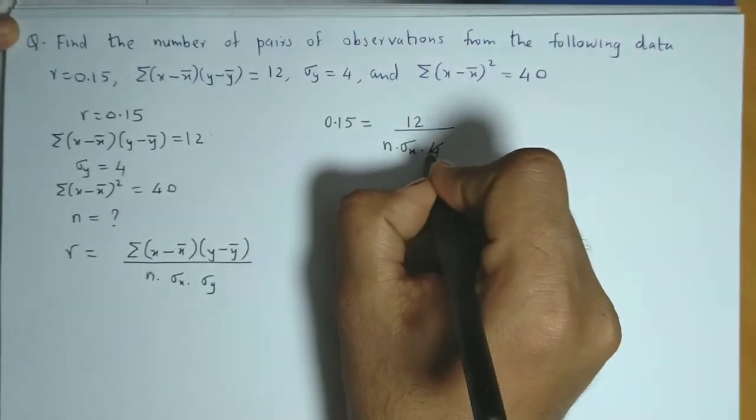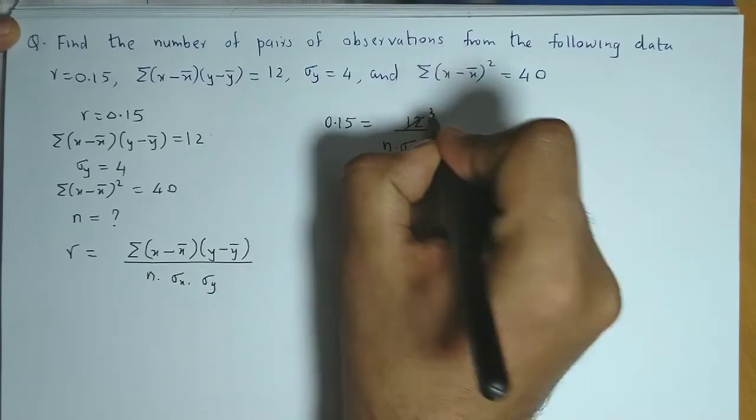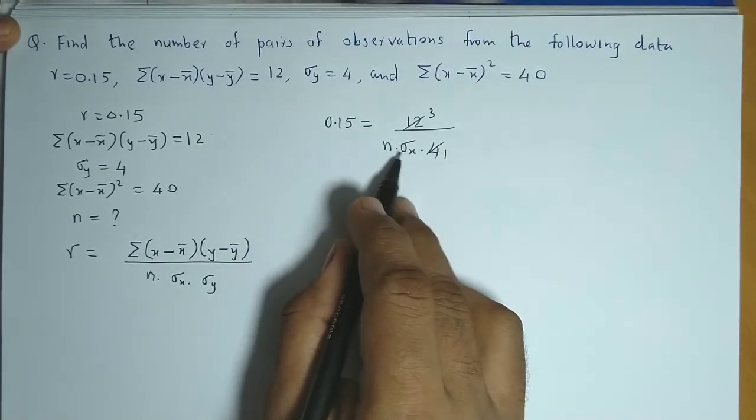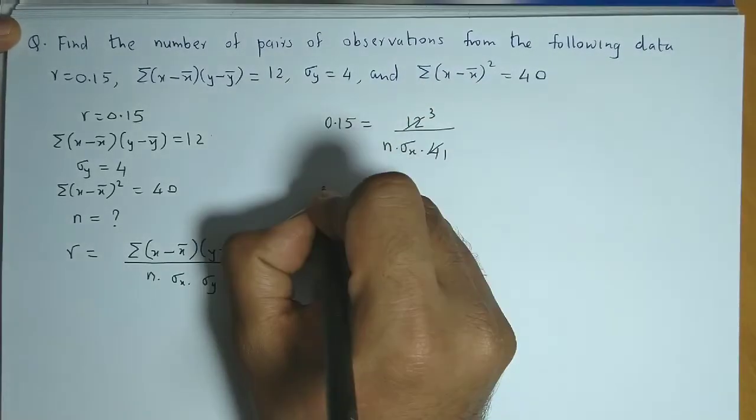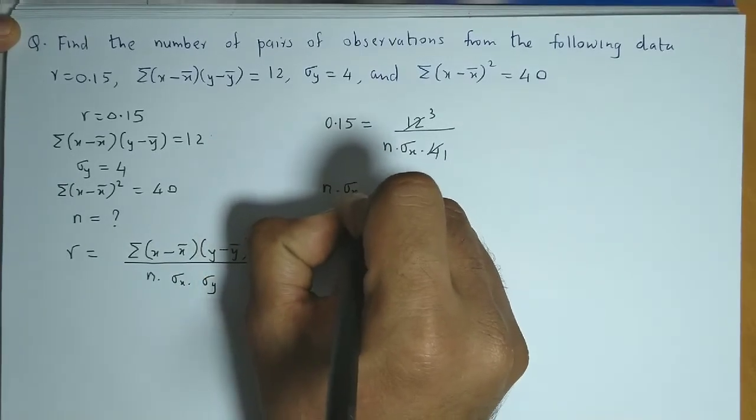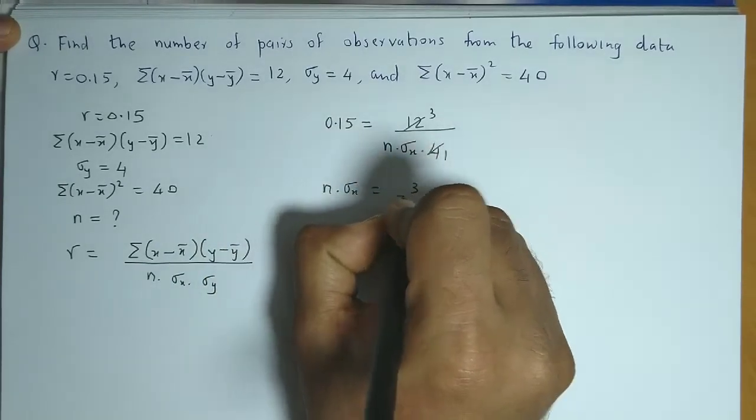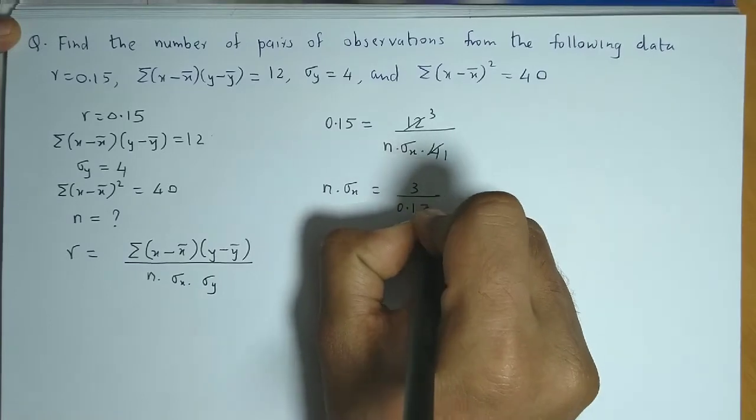So we cancel out this 1x and this becomes 3x. Now these two terms we take to the left hand side. So n times σ_x is 3 divided by 0.15.